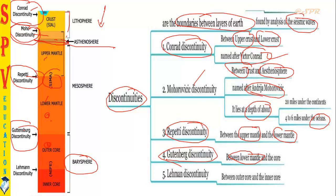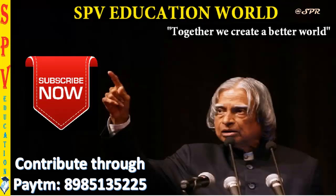Then comes the Lehmann discontinuity — between the outer core and inner core. To clarify terms: barysphere refers to the core, and mesosphere refers to the mantle. The Lehmann discontinuity is the boundary between the outer core and inner core. These are all the important discontinuities you must learn.